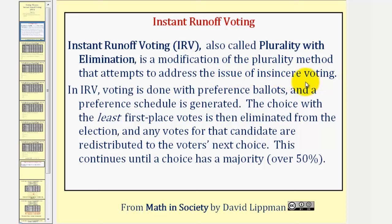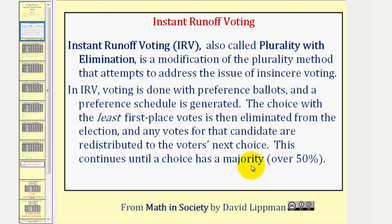As we discussed in the previous lesson, in IRV, voting is done with preference ballots and a preference schedule is generated. The choice with the least first place votes is eliminated from the election and any votes for that candidate are redistributed to the voter's next choice. This continues until a choice has a majority, or over 50%, of the votes.